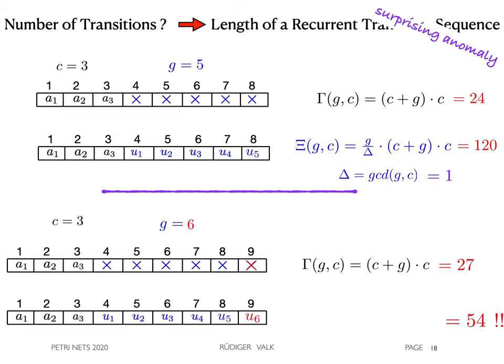The explanation for this anomaly is the following formula, as proved in the paper. It contains a factor g divided by the greatest common divisor of g and c. Hence, if the gcd is different from 1, we have a kind of resonance between the streams of cars and counter-cars.